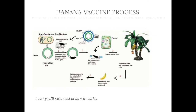Afterwards, the banana zygote, which contains the modified DNA, will divide into many daughter cells, which inherit the modified DNA. The cell grows into a complete banana. When we eat the banana, the bacterial protein is introduced to our body, and it will start to make antibodies. Meanwhile, our body will memorize the antibodies.